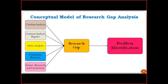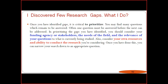When you discover a few research gaps, what should you do? The very important first step is to critically prioritize — if you are getting two, five, or ten research gaps, prioritize all of them in an effective, efficient, and systematic manner. Second, consider your funding agency — who is going to fund the research. Every research requires various types of resources; without resources, research cannot be completed. Funding agencies and various stakeholders, whether directly or indirectly involved, are very important.